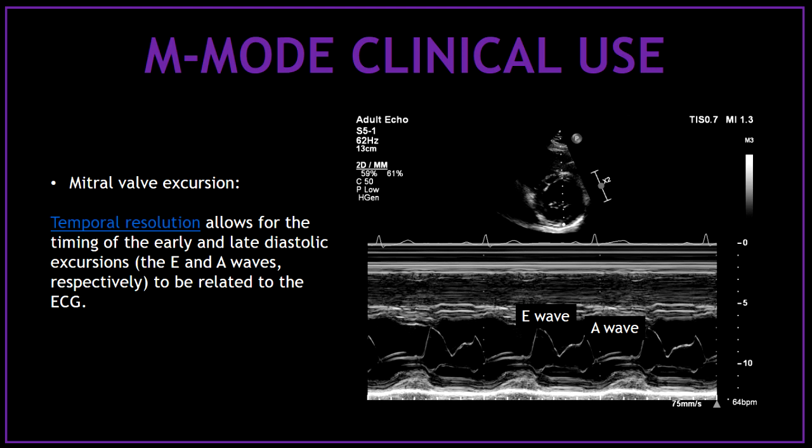We can also use the mitral valve excursion to assess the diastolic function of the left ventricle. Temporal resolution allows for the timing of the early and late diastolic excursions to be related to the ECG, corresponding to the E and A waves on the mitral valve excursion.